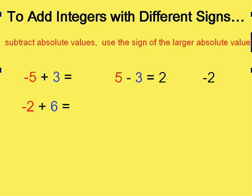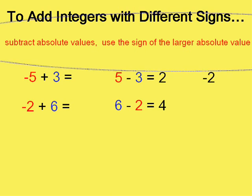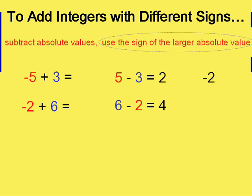In this problem, negative two and six, once again, subtract the absolute values. Forget the signs and just subtract. We get a four. Now what sign is that four going to get? We're going to use the sign of the number with the largest absolute value. That's six in this case. That's the positive. So we don't have a negative four. The answer is a positive four. We don't have to write the positive, by the way.